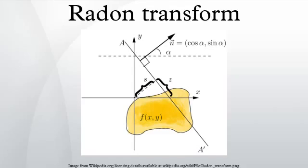It was later generalized to higher-dimensional Euclidean spaces, and more broadly in the context of integral geometry. The complexity analogue of the Radon transform is known as the Penrose transform.